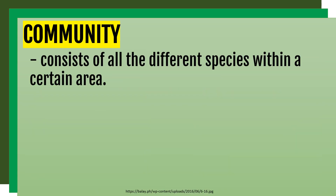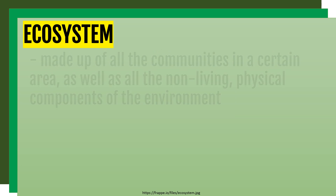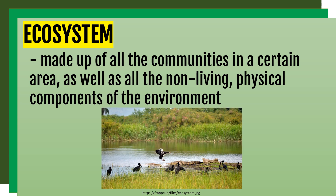Next is community. Community consists of all the different species within a certain area, including humans, animals, and even plants within that area. Ecosystem is made up of all the communities in a certain area, as well as all the non-living physical components of the environment, such as soil, water, and rocks.